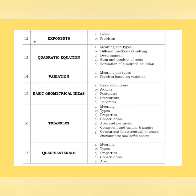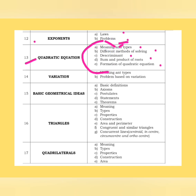From exponents: laws and problems — a small concept but expect definite questions. Then quadratic equations — very important: meaning and types, different methods of solving, discriminant, sum and product of roots, formation of quadratic equations. The entire chapter is already covered for the GPSR exam; check the videos. Then variation: meaning, types, and problems based on variation.